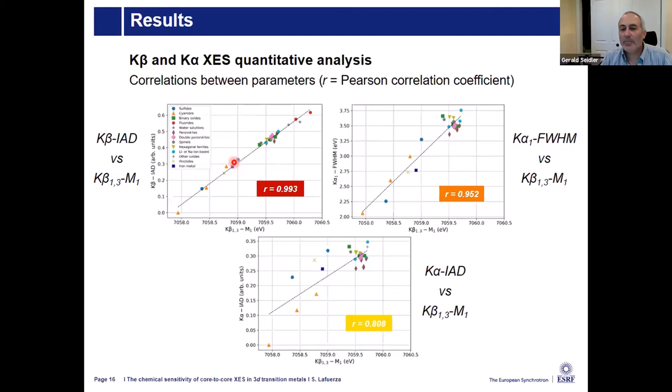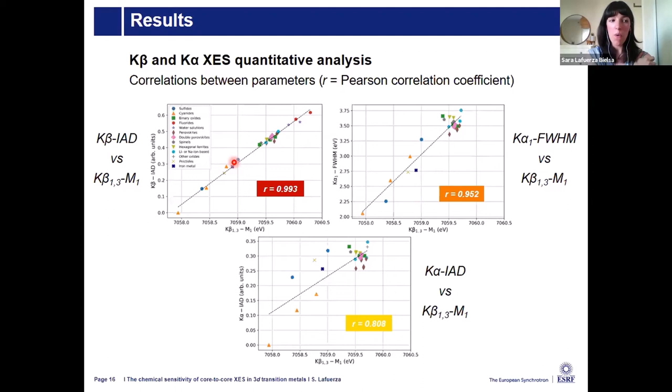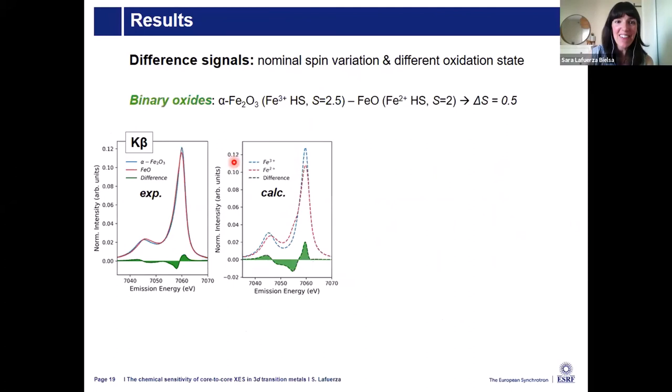Regarding radiation damage: damage was observed mainly for cyanide compounds and iron 3+ in solution. This was mitigated by estimating threshold exposure times, staying below those limits, and applying aluminum filters to attenuate the beam when necessary.